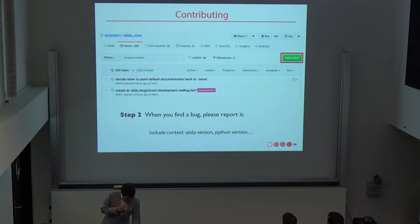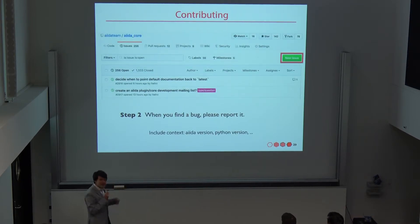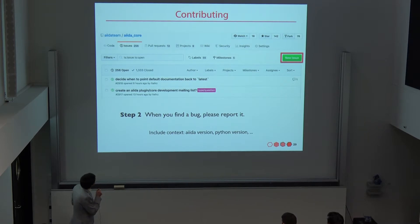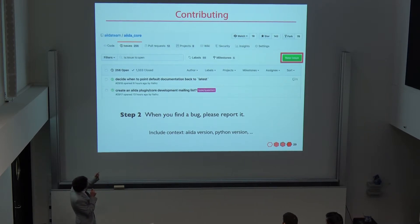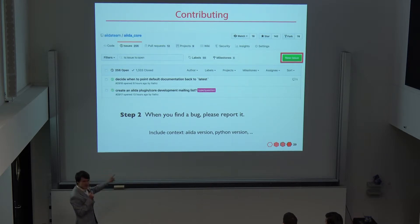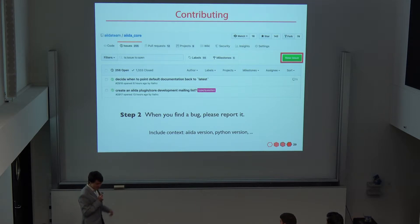Step two: if you find a bug, please go to the AIDA core GitHub repository, click on issues, and report your bug together with the AIDA version, Python version, et cetera. This is really important.